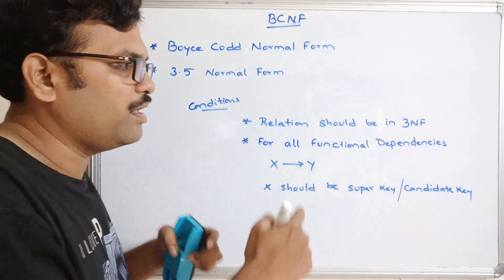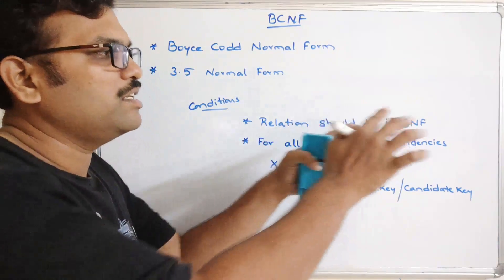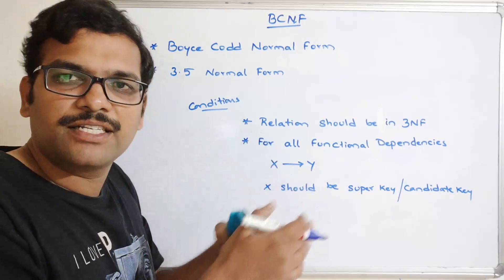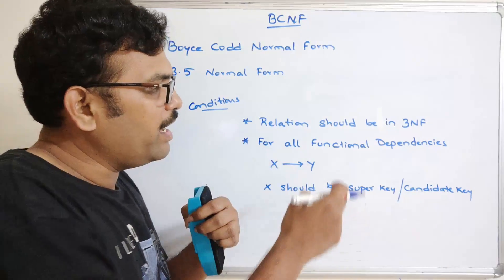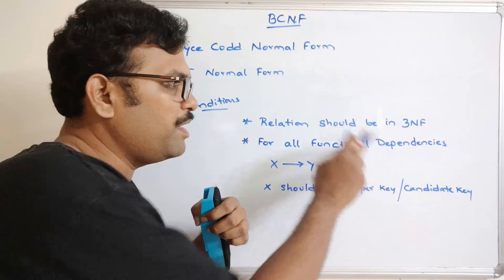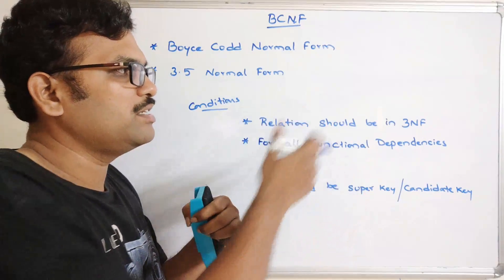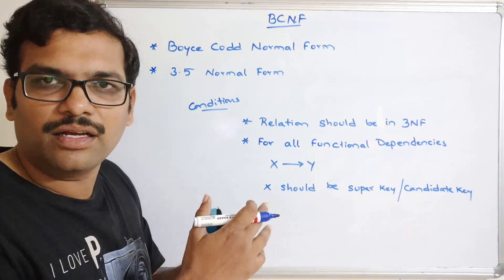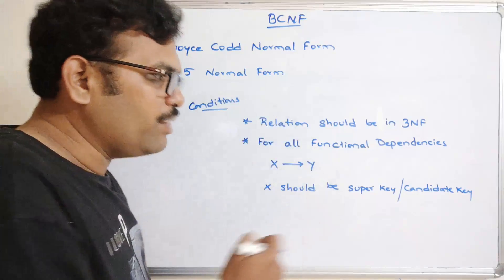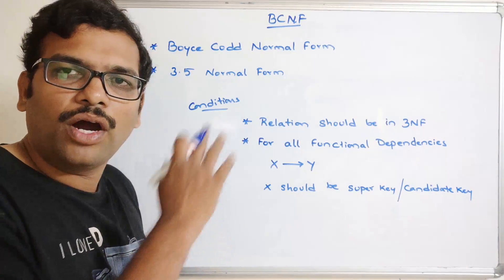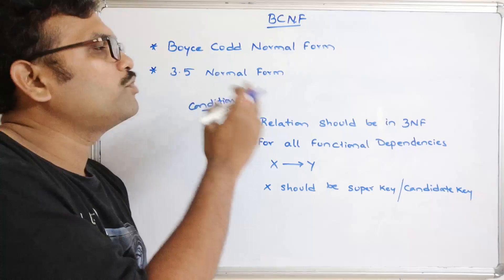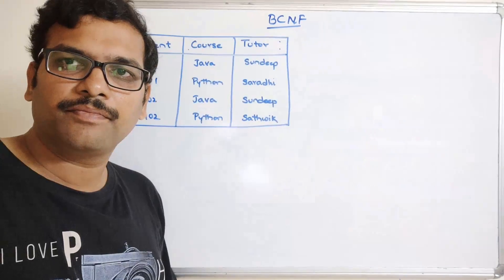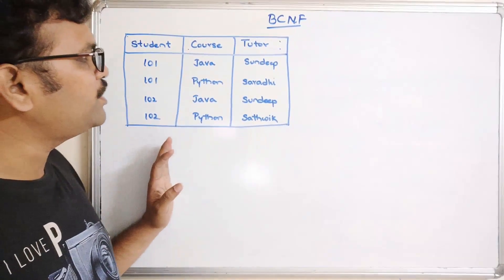You need to know what 3NF is and how a relation satisfies it. I will post the link to the playlist in the description — go through that to get an idea about functional dependencies and 3NF, and then you will understand this session clearly. Let us take one example and I will show you how to convert a 3NF relation to BCNF.